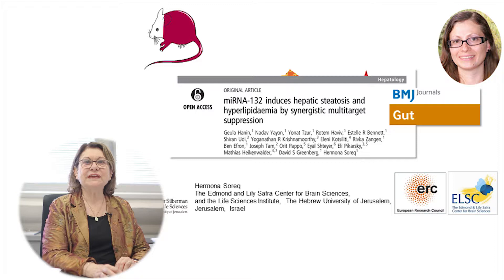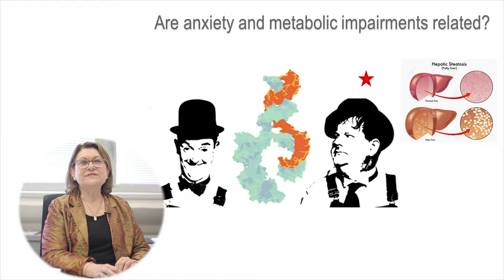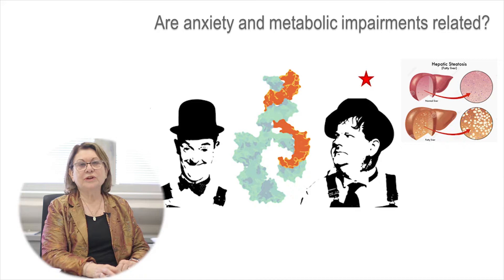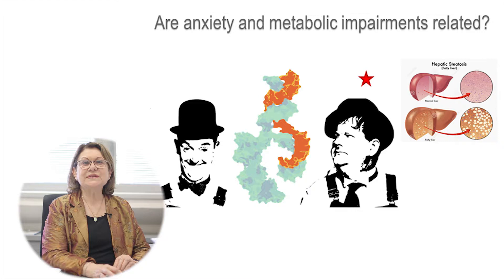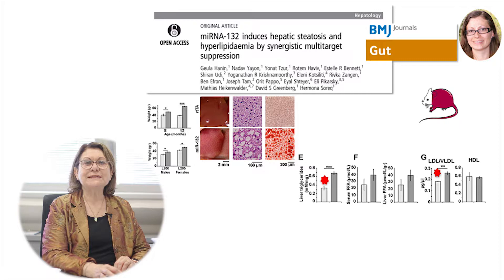If so, we should see fat accumulation in the liver. What Geula Hanin in the lab did was create engineered mice with overexpression of the stress-induced microRNA-132 in all body tissues except the brain, because if we included the brain the mice never got born. Too much stress is not good for brain development. The mice engineered to overexpress this stress-induced microRNA showed fat accumulation in the liver, visible as red labeled droplets.